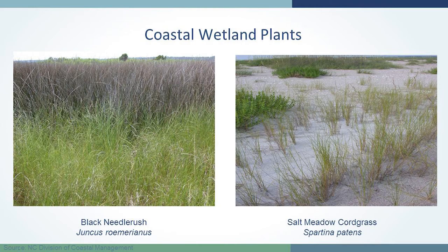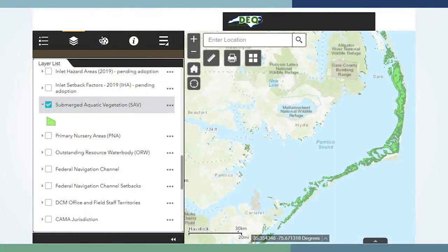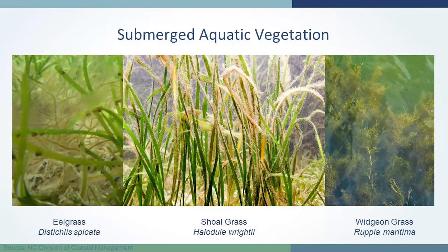Moving up the gradient to slightly higher topography, what's unique about the sound-side estuary is that small changes in elevation result in plant species that have evolved to proliferate in specific areas. Black needle rush grows at a little higher elevation than smooth cordgrass, so you see a lot of zonation. Going a little higher on the beach is salt meadow cordgrass. Other species you might see commonly are salt grass, spike grass, and sea lavender on higher or more sandy elevations where they're not inundated as frequently.